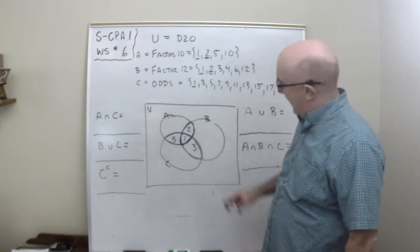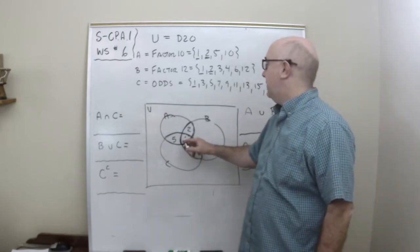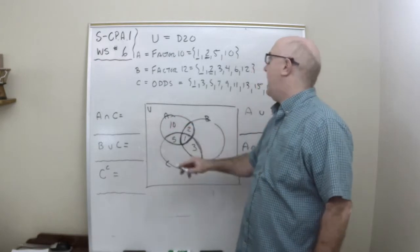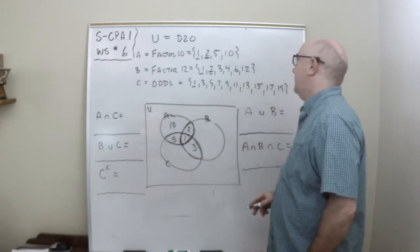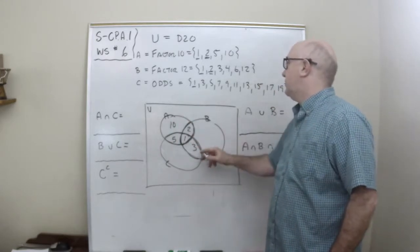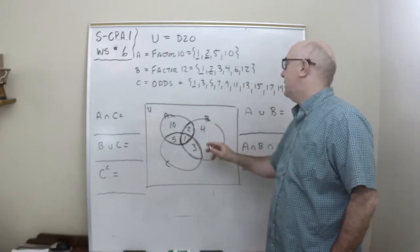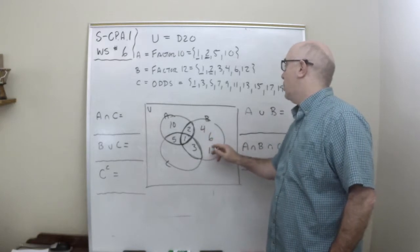Now once you have that, we can put in the rest. So 10 is over here, A is the only one that has the 10. Right, and then in B's case I get 1, 2, 3, 4, 6, and 12.